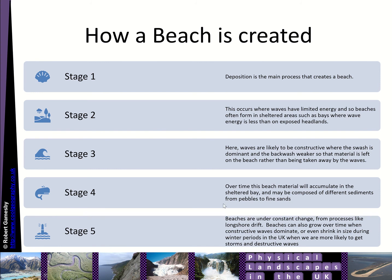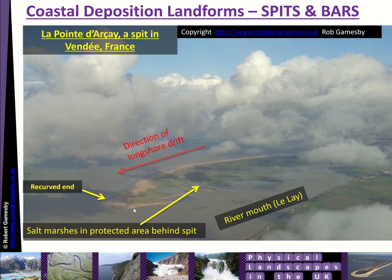Over time, beach material accumulates in the sheltered bay and could be composed of different sediments. Beaches are under constant change from processes like longshore drift. They can grow over time when constructive waves dominate, or even shrink during winter periods, particularly in the UK where we get more destructive storm waves.